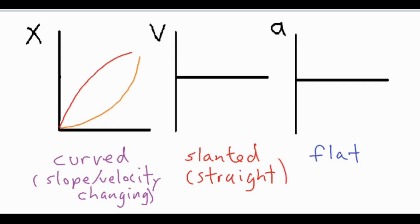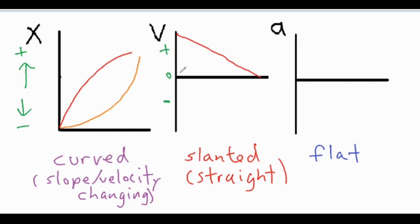Both of these are going in the positive direction. Anything that's rising up on the graph is going in the positive direction, and anything getting lower is in the negative direction. We have one slowing down in red and one speeding up in orange. Because both are going in the positive direction, they will be above the x-axis. The red one is positive but decreasing heading toward zero, and the orange one is moving away from zero, showing the numbers are increasing.